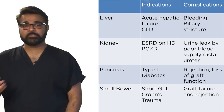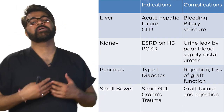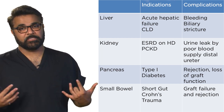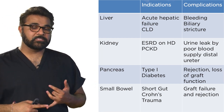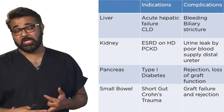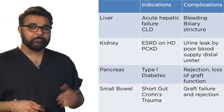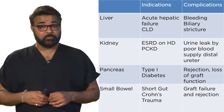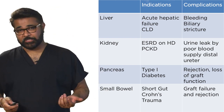Small bowel transplants are most commonly due to some type of insult to the intestines. Patients may develop things like Crohn's disease or have had severe gunshot trauma, leading to short gut syndrome. The complications with small bowel transplant are graft failure and rejection.